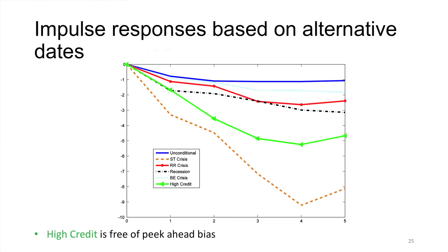The events you pick out which look like losses and high credit growth get you a big decline in output. This output path using credit losses and credit growth is not as bad as Schularik and Taylor, but it's somewhere between the Reinhardt-Rogoff and Bordeaux-Eichengreen path and Schularik and Taylor. This set of dates is interesting because it corresponds to what we think of theoretically as a crisis — losses and fragility — and second, it's free of peak-ahead bias, because these crisis dates are defined based on quantitative information prior to time T: spreads and credit growth are all observable.